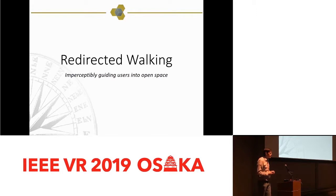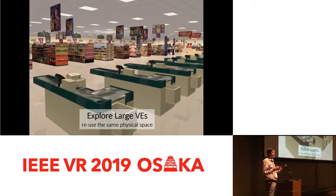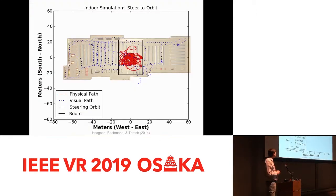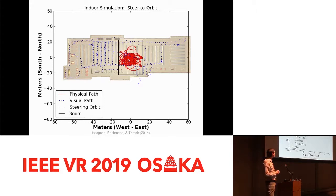I unfortunately don't have a lot of time to dig into exactly how redirected walking works, but the general theory is that we want to give people the ability to physically walk and navigate through very large virtual environments, such as a full-scale grocery store, and allow them to wander and explore the entire store while physically being situated in a much smaller space. Occasionally they will hit the walls and we switch to a resetting algorithm to get them turned around.